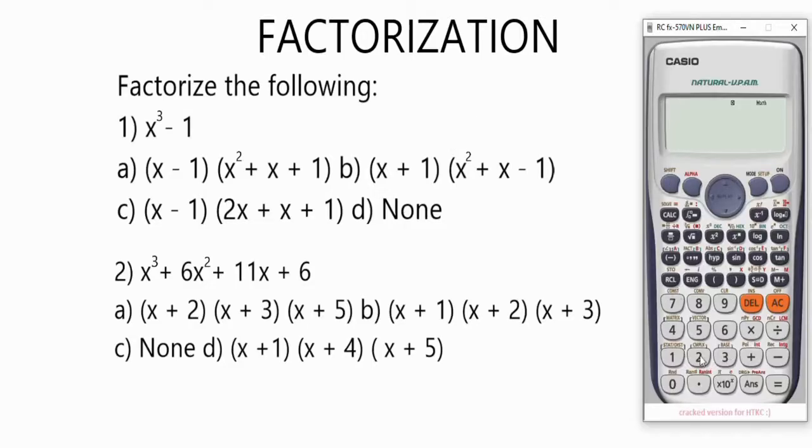So we're going to store 2 on this calculator. Press 2, Shift, STO button, then press X. This will indicate that 2 has been stored as x on the calculator.